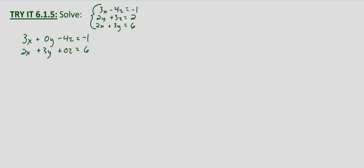When we do these calculations, it's going to introduce y into the resulting equation, even though it wasn't in one of our original equations. To eliminate x, we need the least common multiple of 3 and 2, which is going to be 6. So we multiply this first equation by 2 and we multiply the second equation by 3. That gives us 6x plus 0y minus 8z equals negative 2. And then distributing the 3, we have 6x plus 9y plus 0z equals 18.